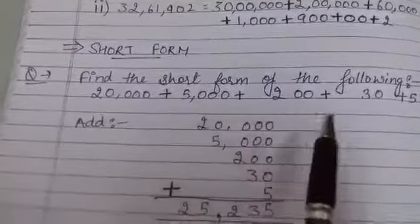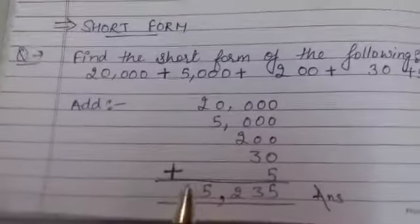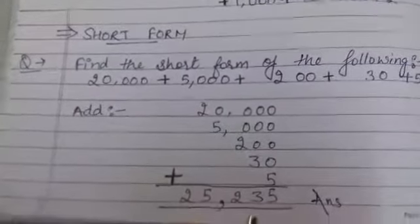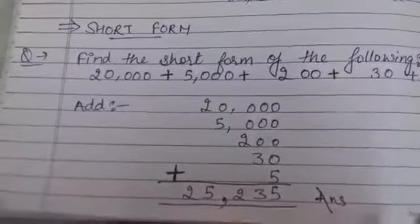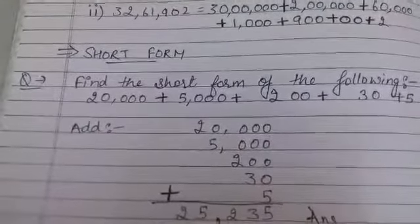So, we will be adding all the numbers now. It will be 25,235. I hope the old concept is clear to all of you.